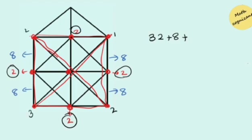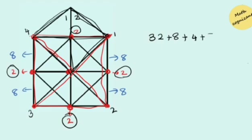We also need to count the top triangle. When the triangle is divided by a vertical bisector there is a formation of three triangles, and where two shapes meet there are two more triangles — so altogether five triangles. Adding all: 32 plus 8 is 40, plus 4 is 44, plus 5 gives you 49 triangles total in this shape.